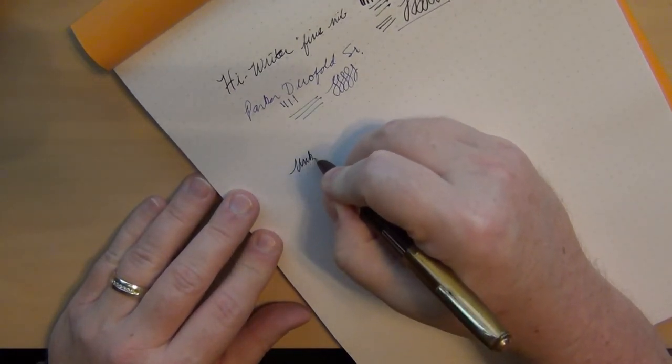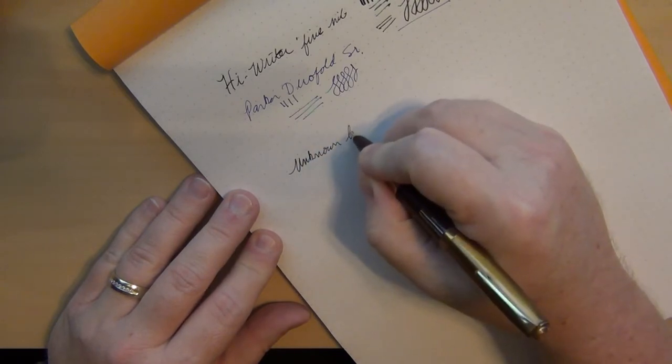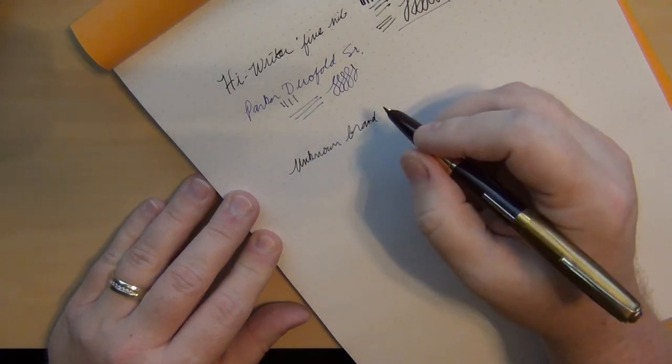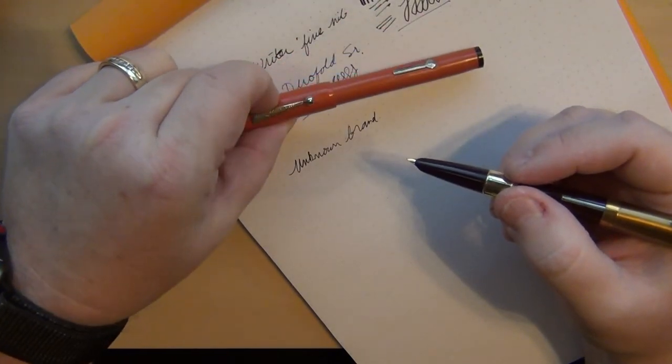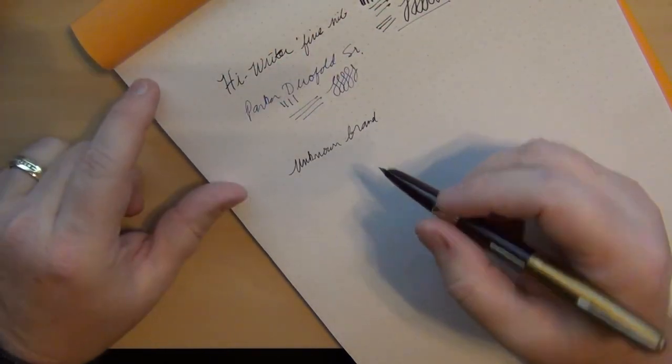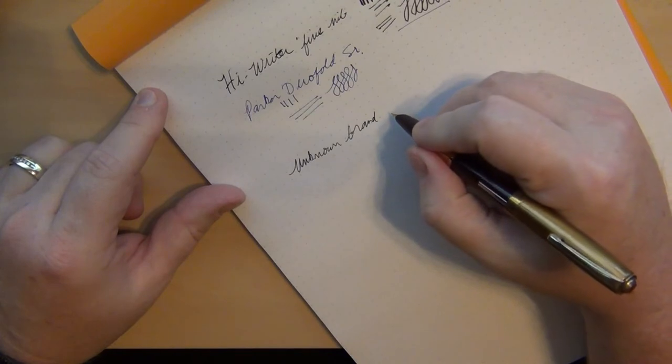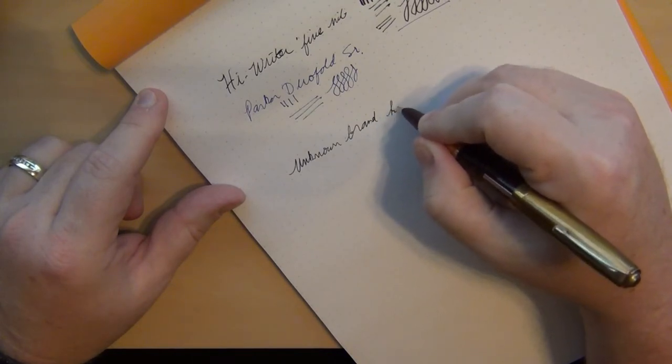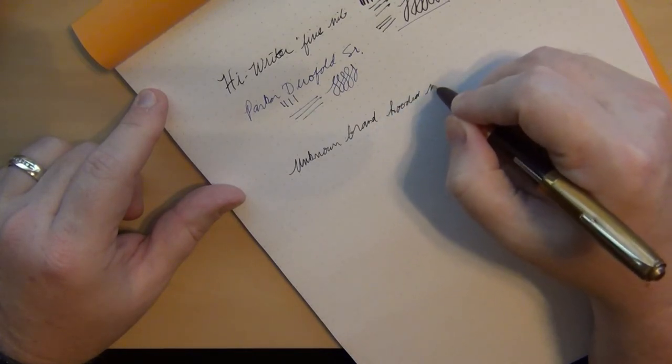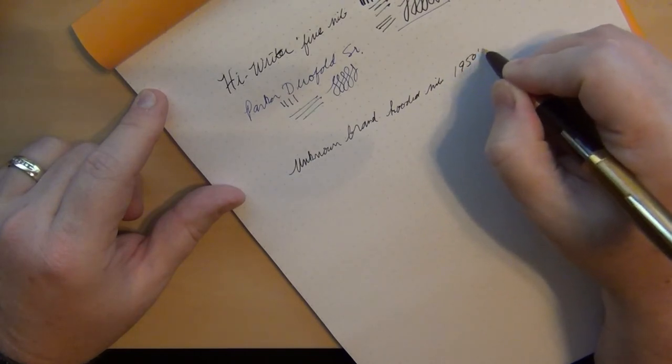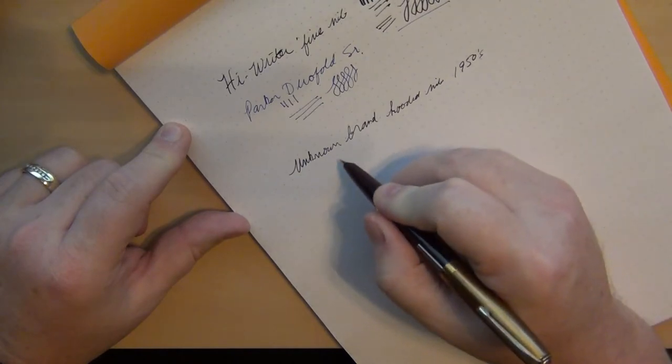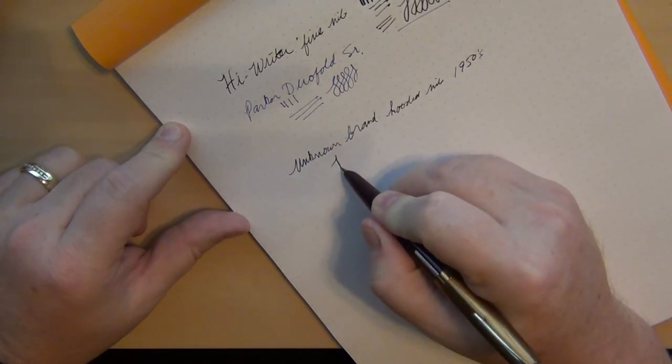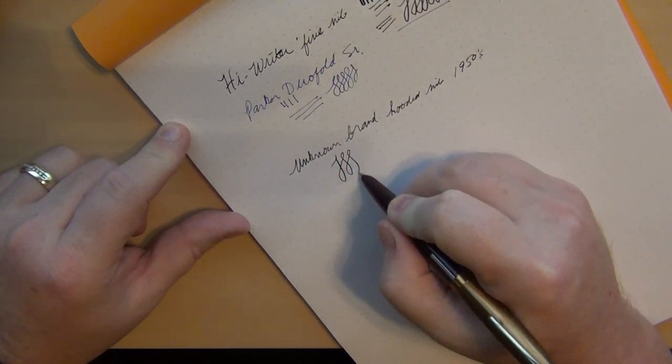So this one is an unknown, an unknown brand. Now this unknown brand writes a lot smoother than this HiRiter I can tell you that. This one with the hooded nib from the 1950s - I can really tell it makes my handwriting look different with how thin that line is. I don't expect to get any line variation because of the hooded nib.